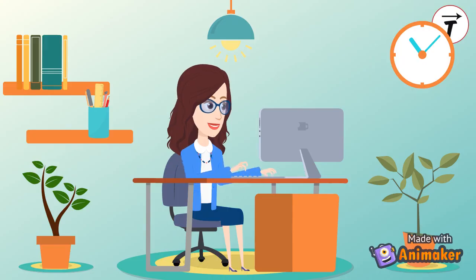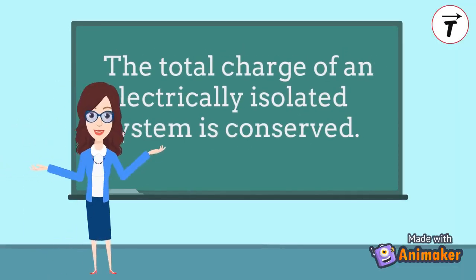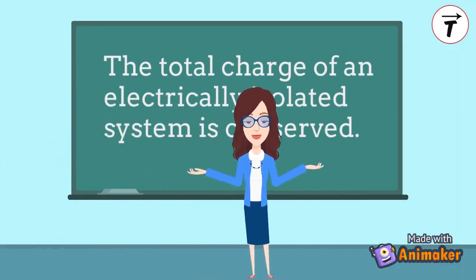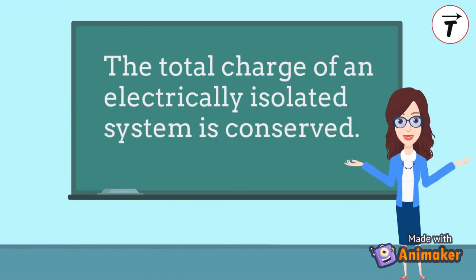It means that the charge of the system ruler is conserved. Let's state the law of conservation of electric charge: the total charge of an electrically isolated system is conserved.